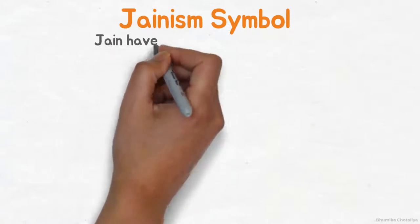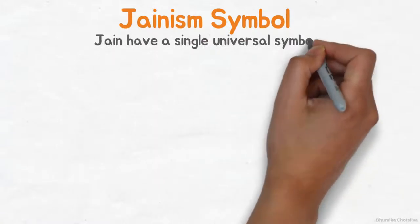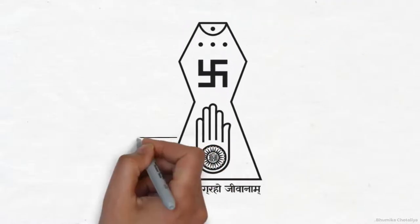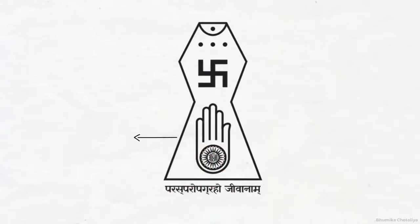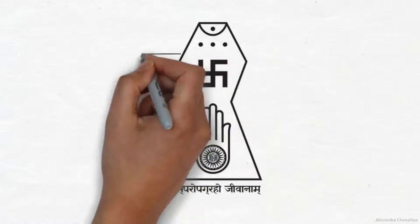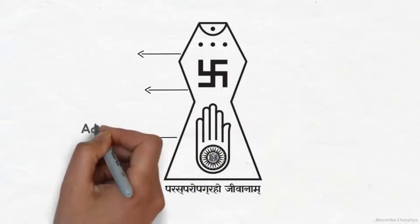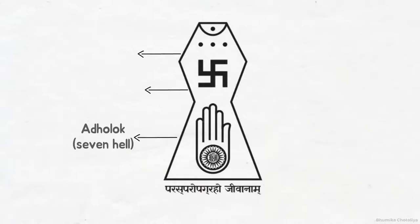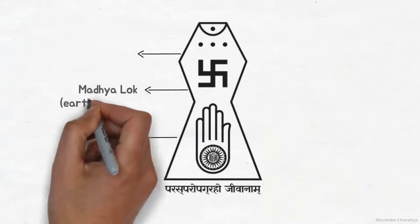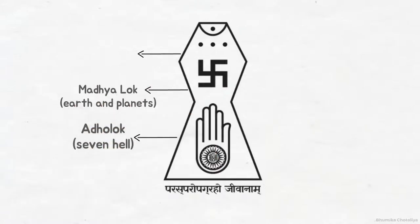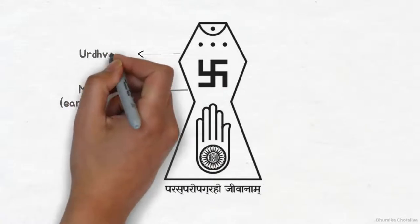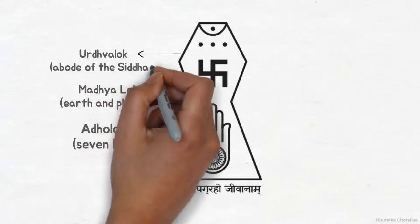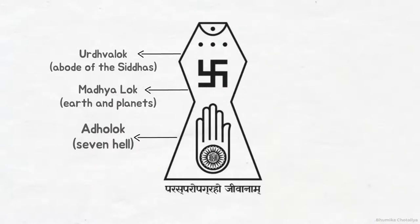Jains from across all sects decided to have a single universal symbol. The outline of the Jain symbol represents Lok, and it is divided into three Loks. The lower portion indicates Adholok, which consists of the seven hells. The middle portion indicates Madhya Lok, which consists of the earth and the planets. The upper portion indicates Urdhulok, which contains the heavenly abodes of all celestial beings and the abodes of the Siddhas.